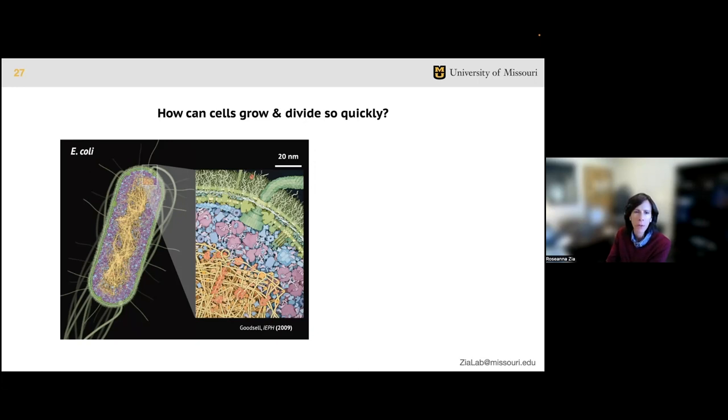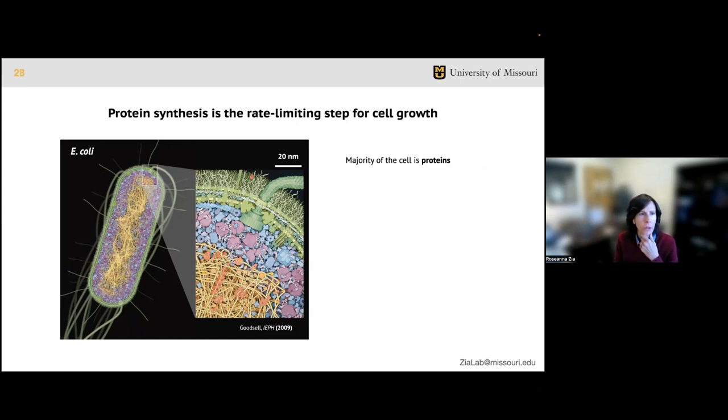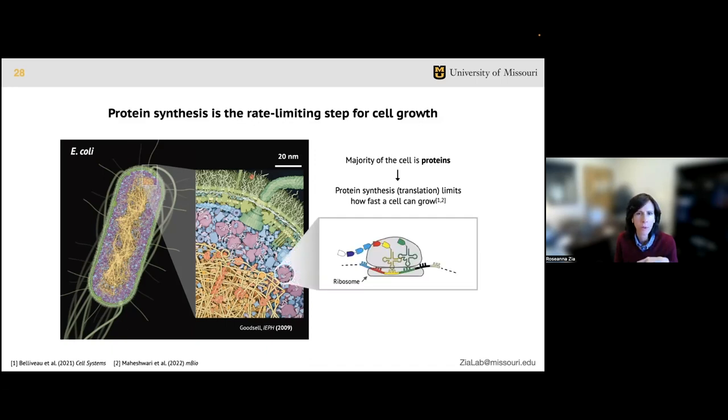Here I'll show how we focused on E. coli, which can grow rapidly, doubling in as little as 20 minutes. This means it has to replicate all its contents in very short time - it's got to synthesize the majority of its dry mass every doubling. The majority of these contents are proteins, so it's unsurprising that protein synthesis limits how fast a cell can grow. This process is called translation, and it happens in the crowded cytoplasm at ribosomes, which use information stored in mRNA to assemble amino acids into protein products.